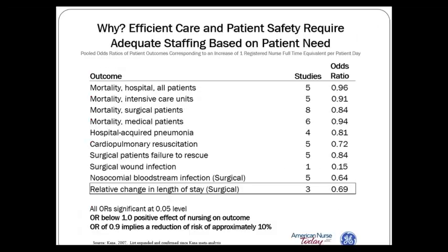We have a substantial and growing body of evidence that efficient care and patient safety require adequate staffing based on patient need. As of 2007, there were many studies which looked at patient outcomes and length of stay and found a very clear association between longer length of stay and more adverse outcomes in hospitals that had lower staffing levels. This has been taken as an indication of the need for adequate staffing.